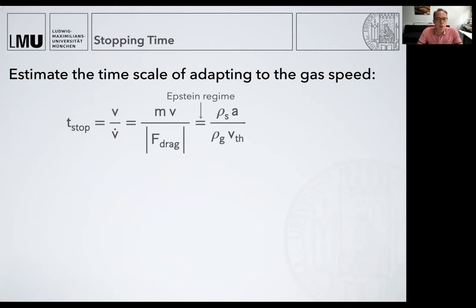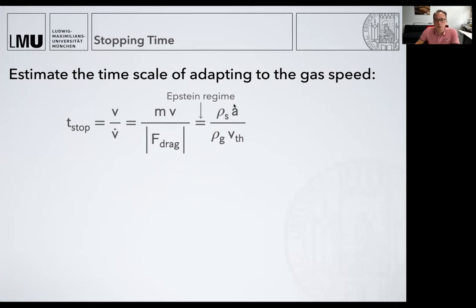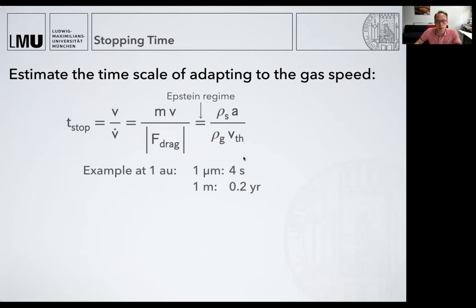Based on this drag force, we can also estimate a timescale associated with this process. Think about a dust grain sitting in some gas: the gas is moving and it will accelerate or decelerate the dust grain depending on the relative velocity. We divide the momentum by this force, which gives us a timescale. You see that it's inversely proportional to the gas density and linearly proportional to the particle size. If we plug in some disk values, typically at least at one AU, we get something like seconds for a micrometer-sized grain — so it's immediately coupled — while a meter-sized particle would take a good fraction of a year to adapt to the gas speed.